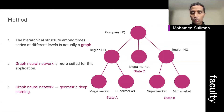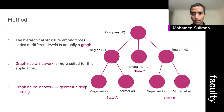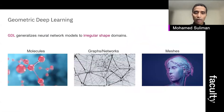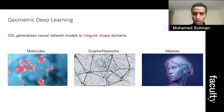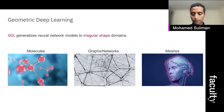By working with graph neural networks we are entering into the geometric deep learning domain. To summarize what is a very complicated topic: geometric deep learning is all about generalizing neural network models to work in irregular shape domains — for example, working with molecules, graphs, networks, and even more complicated meshes.